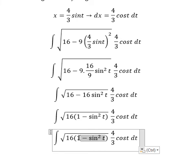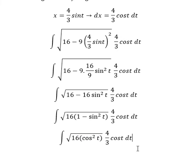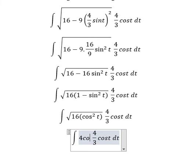So this one we change for cosine t square. The square root of 16 cosine t square, we have 4 cosine t.